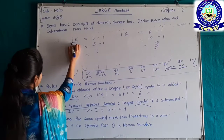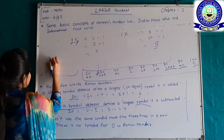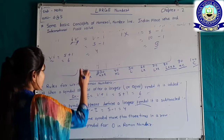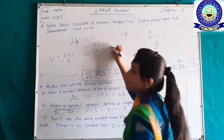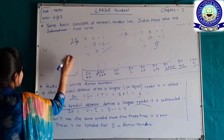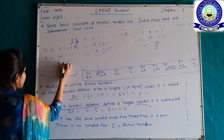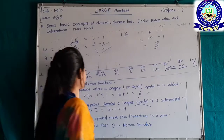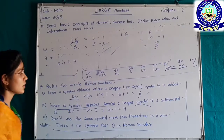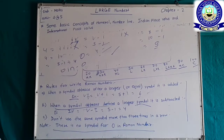When a symbol appears after a larger number we add, but when it appears before a larger number it is subtracted. Also, we cannot use the same symbol more than 3 times — so we can't write 4 as IIII. We write it as IV: 5 minus 1 equals 4. And there is no symbol for 0 in Roman numerals — we cannot write 0 in Roman numerals.